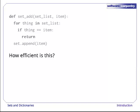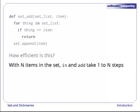But how efficient would this implementation be? With N items in the set, these versions of in and add would take between 1 and N steps to run, depending on how quickly they found the item in question, if at all.